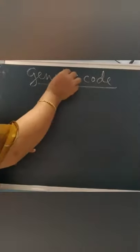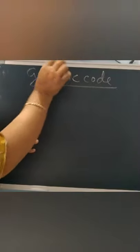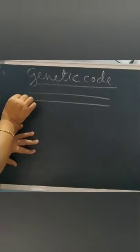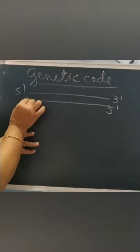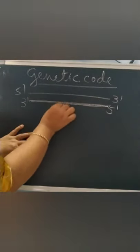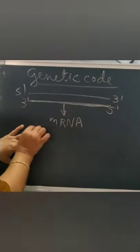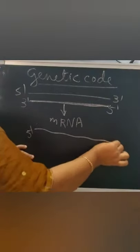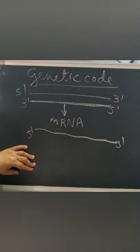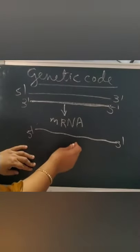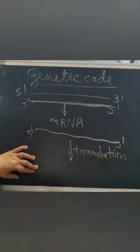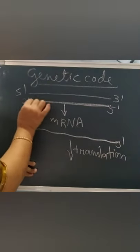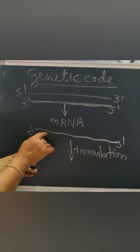We have already discussed translation in the previous class. This is a DNA strand with polarity 3 prime to 5 prime — this is the template strand from where mRNA is formed, by the process of transcription. The complementary bases form the mRNA sequence.